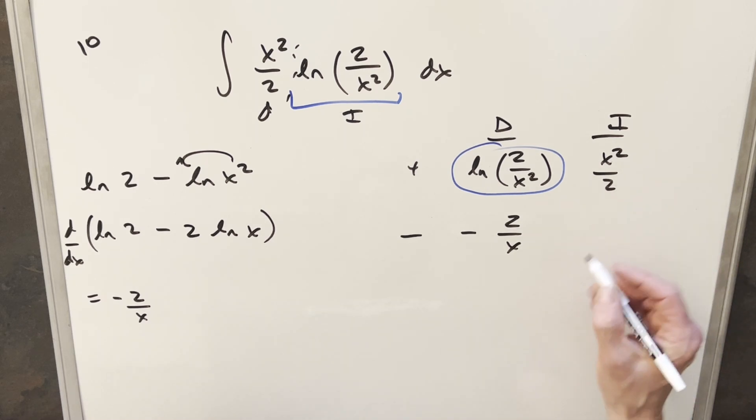And then the integral over here, that's just going to be power rule. So when we integrate this, this is going to be x cubed over 6.